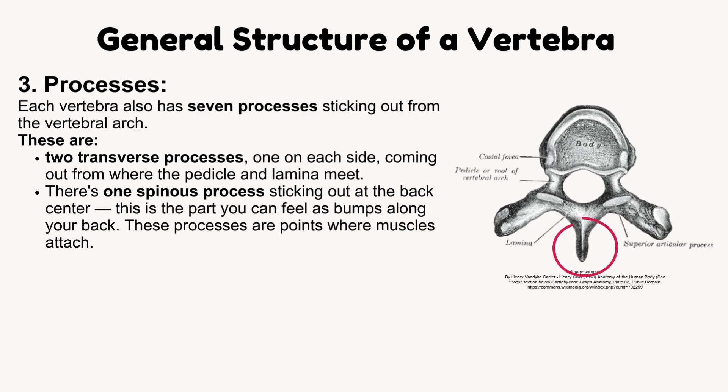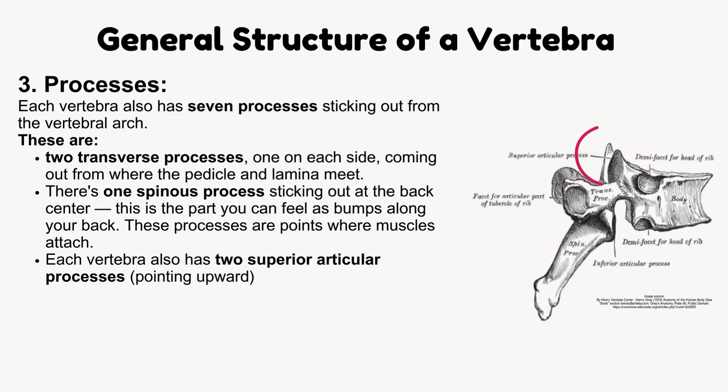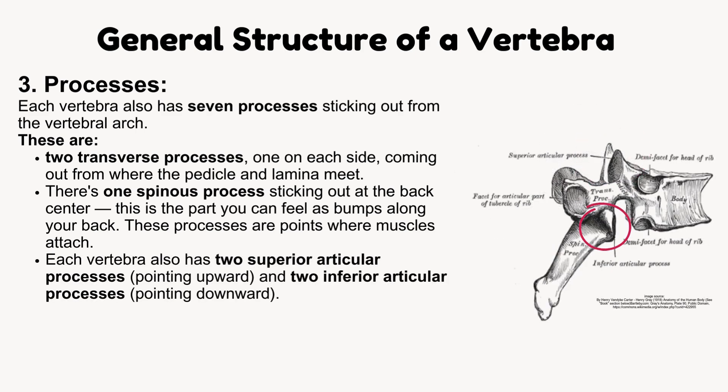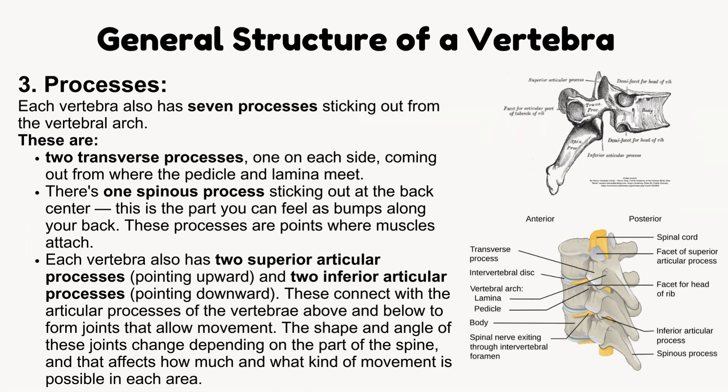These processes are points where muscles attach. There are also two superior articular processes pointing upward and two inferior articular processes pointing downward. These connect with the articular processes of the vertebrae above and below to form joints that allow movement. The shape and angle of these joints change depending on the part of the spine, and that affects how much and what kind of movement is possible in each area.